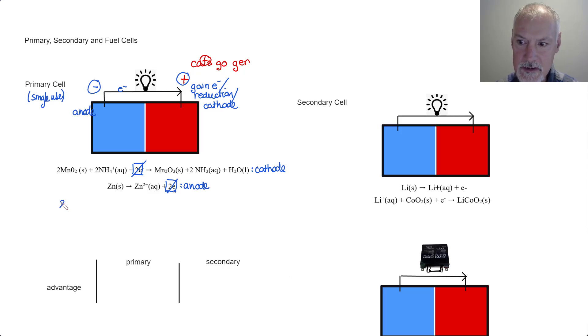And the overall reaction that we then get is two manganese dioxide solid, our zinc solid, our ammonium, and then the products of our reaction, zinc ions, and our manganese oxide, ammonia dissolved in water, and some water.